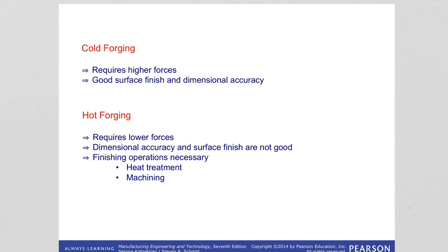In hot forging it will require lower forces because with the heat the material is more ductile, so lower forces are needed to shape the part. However, the dimensional accuracy and surface finish are not as good, because there is an oxide scale forming while we are hammering the part. This oxide layer affects the surface finish. Because surface finish is not good in hot forging, it may require subsequent finishing operations such as heat treatment to modify properties and machining to achieve better surface finish.